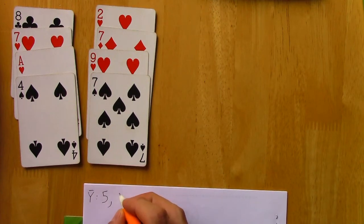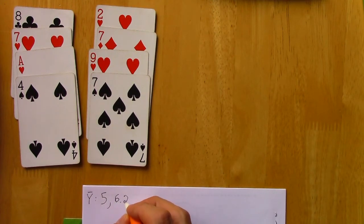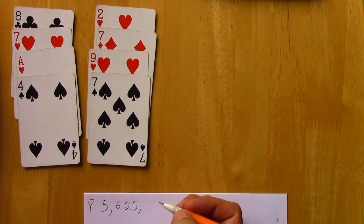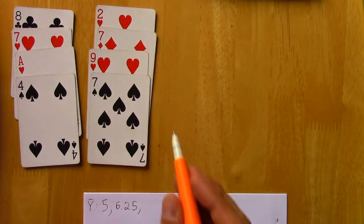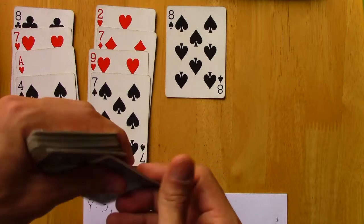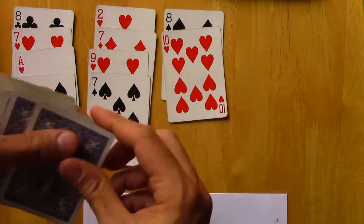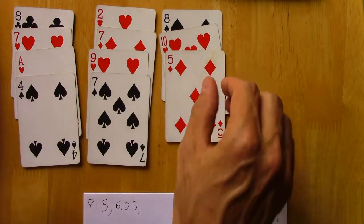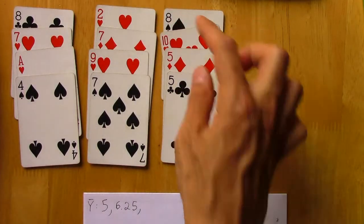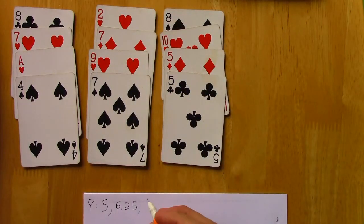So that'll be 6.25 is the mean of our second sample. And you could imagine yet another random sample from the same population: 10, 5, 5, that's 28 divided by 4, so that'll be 7.